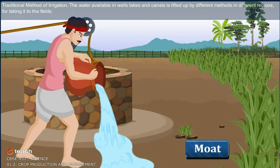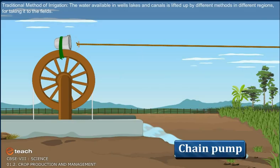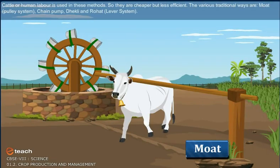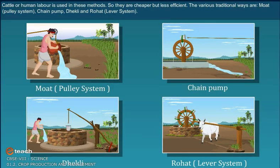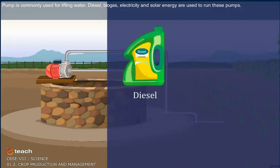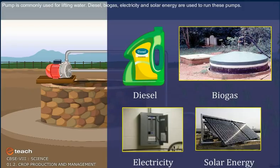Traditional methods of irrigation. The water available in wells, lakes and canals is lifted up by different methods in different regions for taking it to the fields. Cattle or human labour is used in these methods, so they are cheaper but less efficient. The various traditional ways are: Mote Pulley system, Chain pump, Dhekli, and Rahat. Pumps run on diesel, biogas, electricity and solar energy are also commonly used for lifting water.